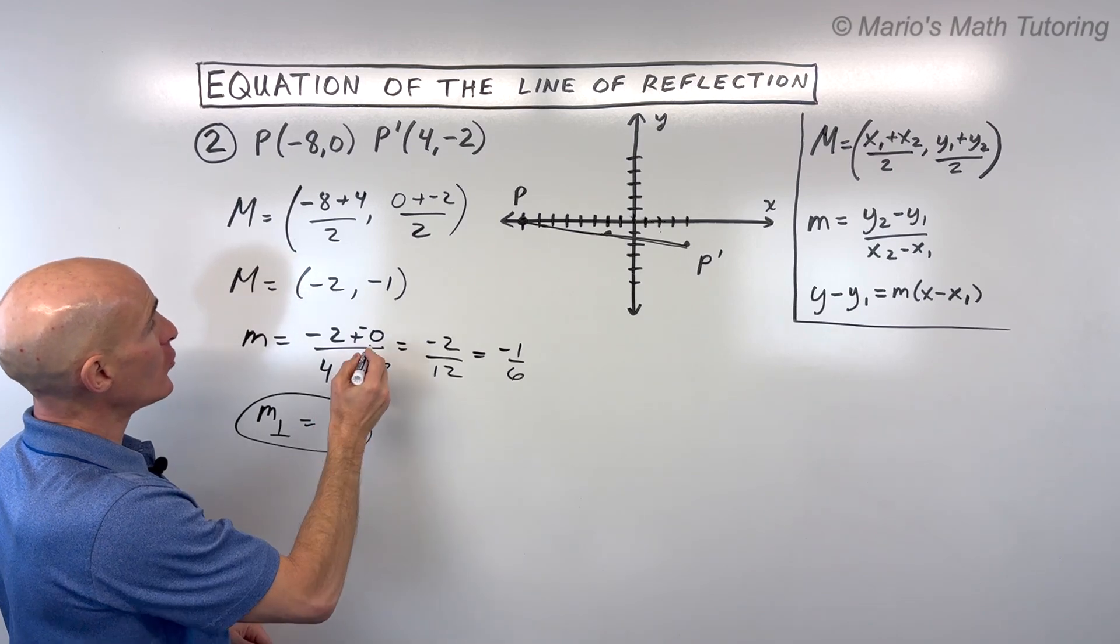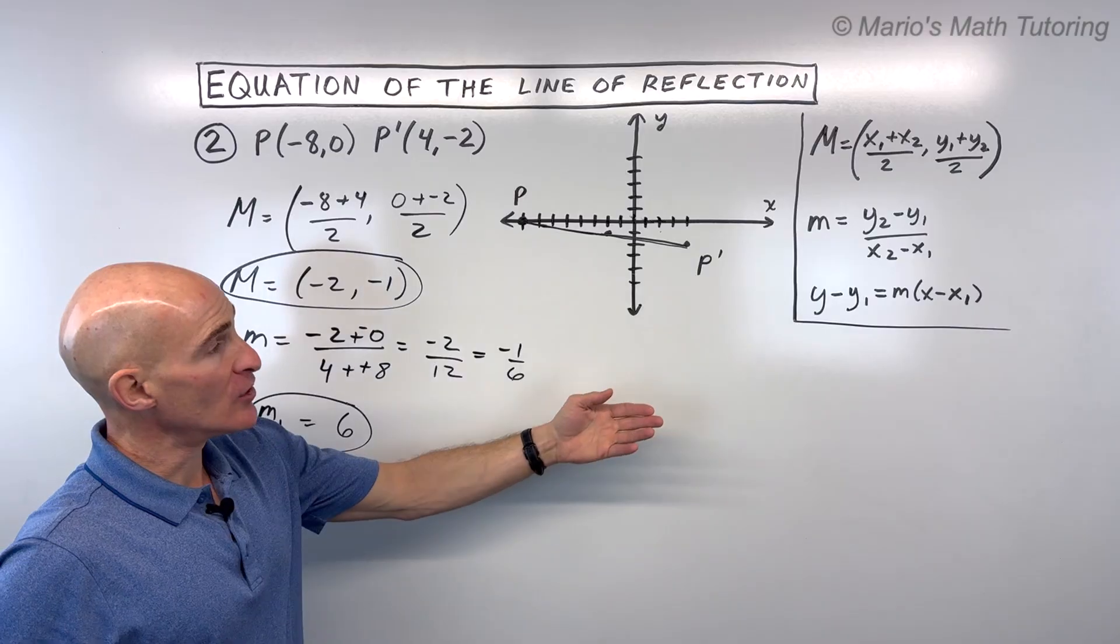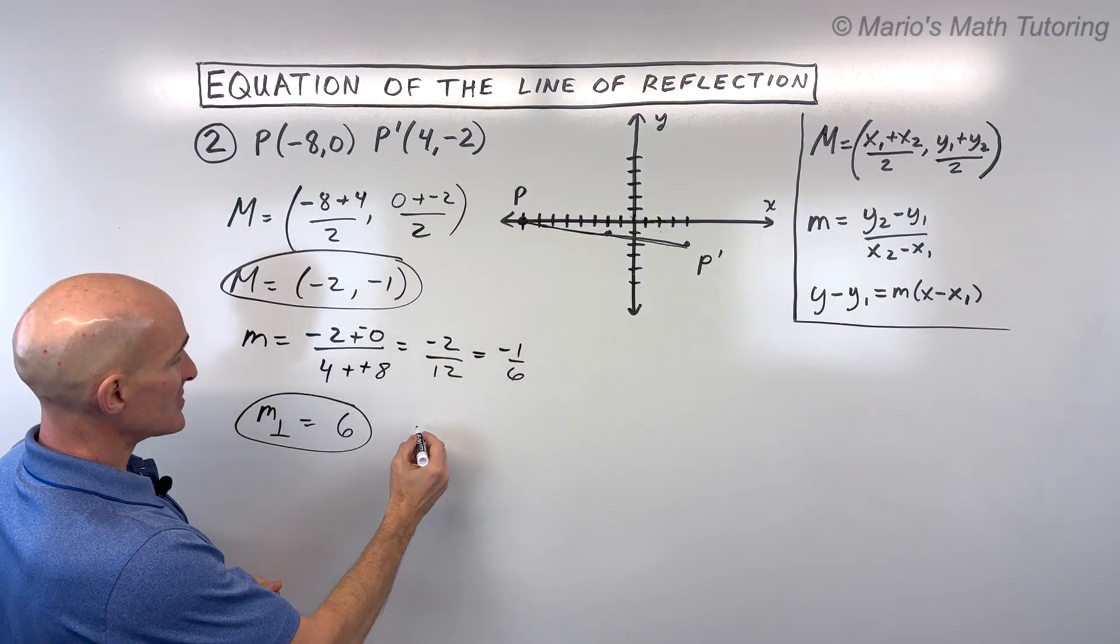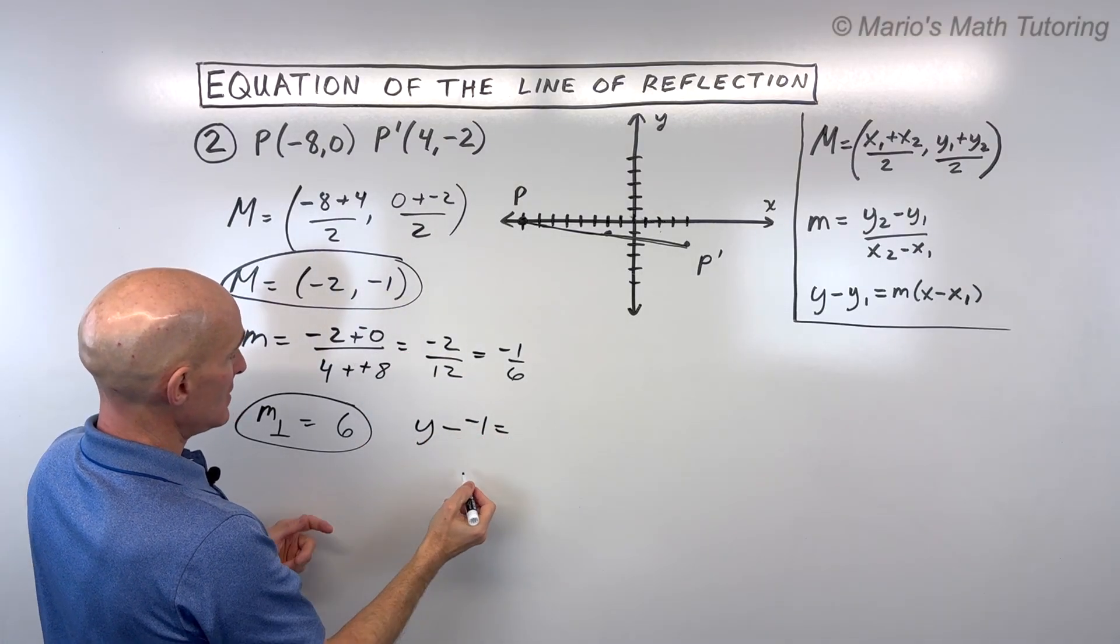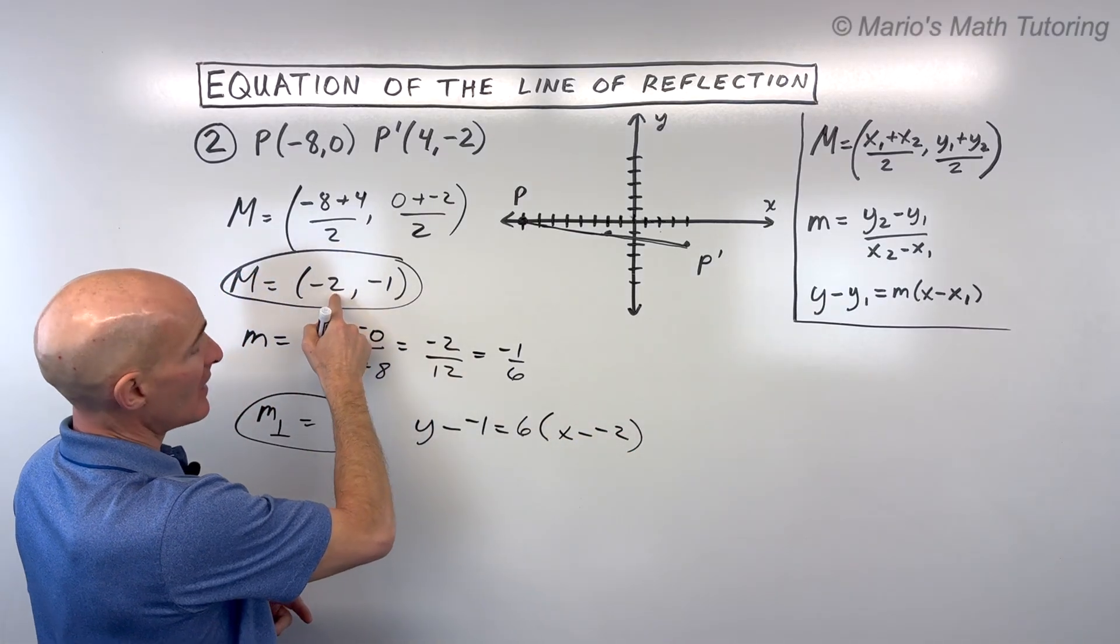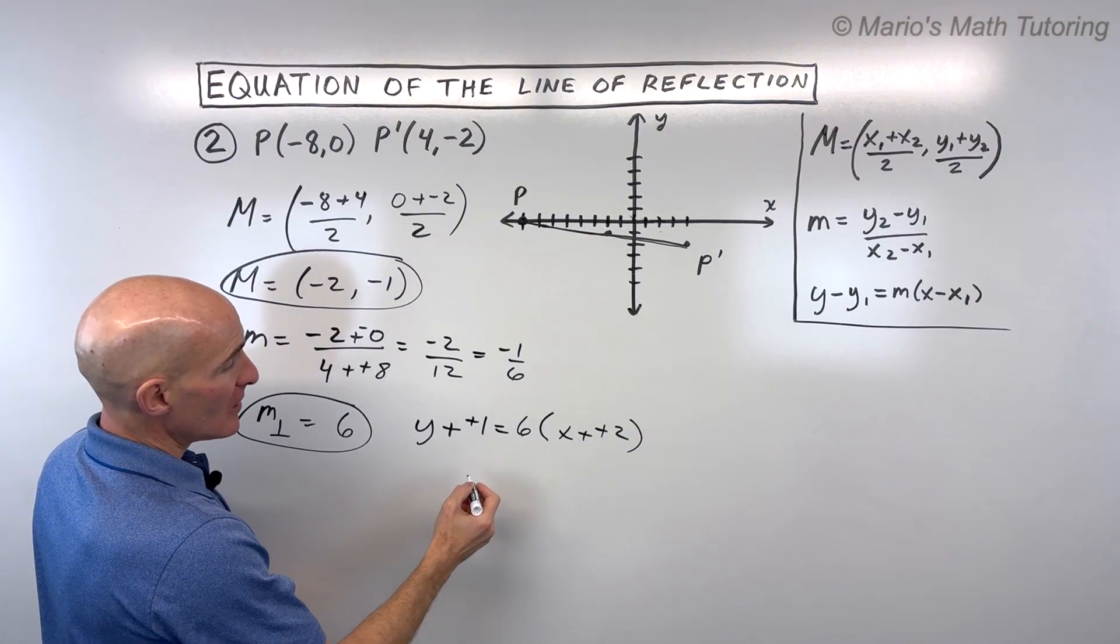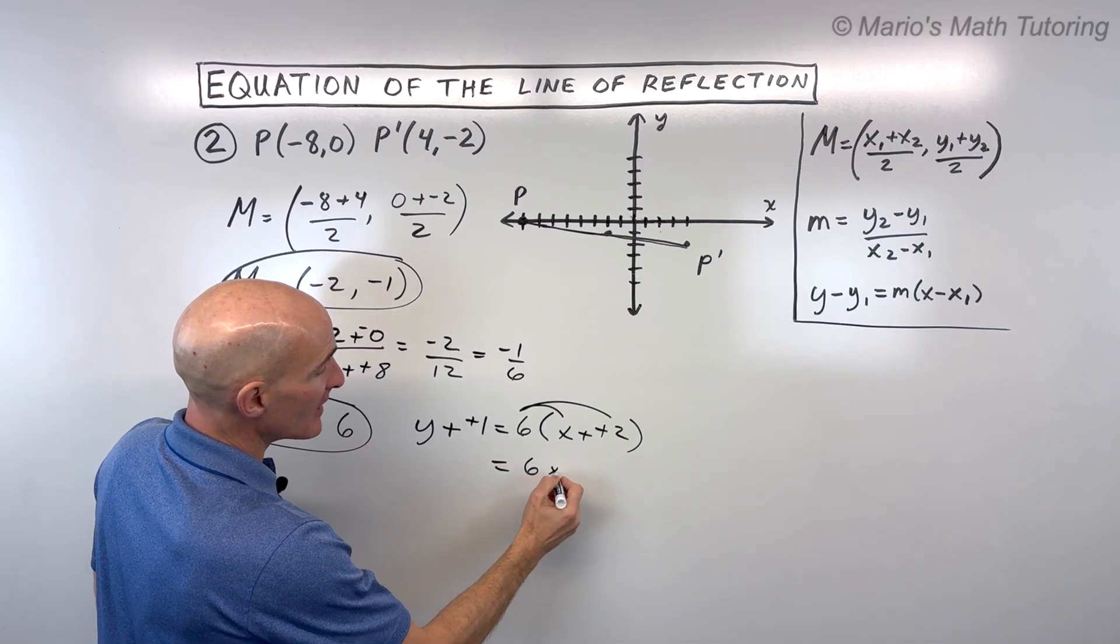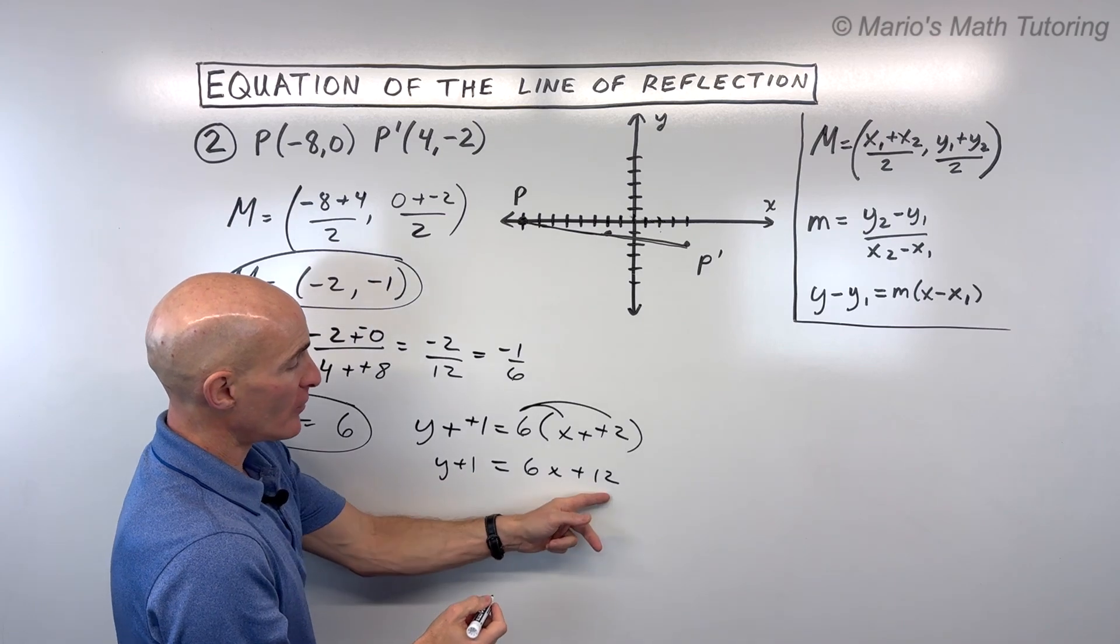So now we have the slope, we have the point that our line of reflection is going to go through. That's the midpoint. We can make use of the point slope form of the equation of a line to get us started. So this is going to be Y minus negative 1 equals the slope 6 times X minus X1. When you subtract, it's like adding the opposite. I'm going to distribute the 6. I'm going to put this into slope intercept form. That's the Y equals MX plus B form. And then I'm going to subtract 1 from both sides.